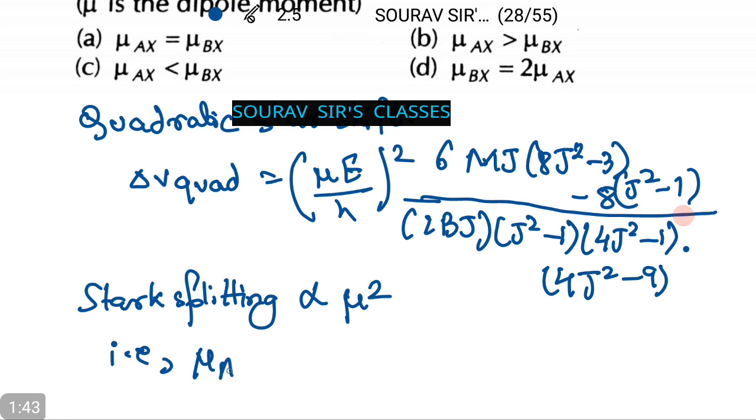That is, μ_AX is larger than μ_BX. That is option number B.